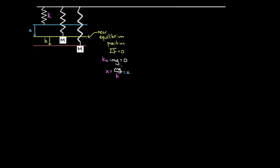This result — A equals Mg over K — is key, so we hold on to it. Now, if we take this mass and pull it down an extra amount B from the new equilibrium position, the forces won't be equal. The spring is stretched extra, pulling up with more force than gravity, so the mass accelerates upward. It reaches the equilibrium position with some speed, shoots past, and oscillates back and forth. The question is: if we pull this down a distance B, what is the speed of the mass when it passes through the equilibrium position?